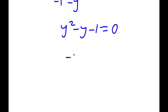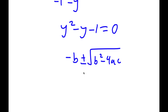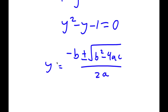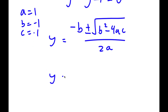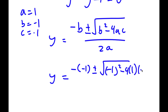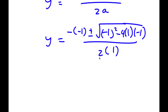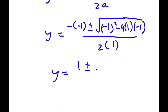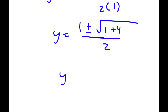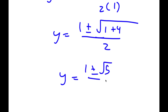I'm going to use the quadratic formula: negative b plus or minus the square root of b squared minus 4ac, all over 2a. Here, a equals 1, b equals negative 1, and c equals negative 1. So y equals negative of negative 1, plus or minus the square root of negative 1 squared minus 4 times 1 times negative 1, all over 2 times 1. This simplifies to 1 plus or minus the square root of 1 plus 4 over 2, which equals 1 plus or minus the square root of 5 over 2.